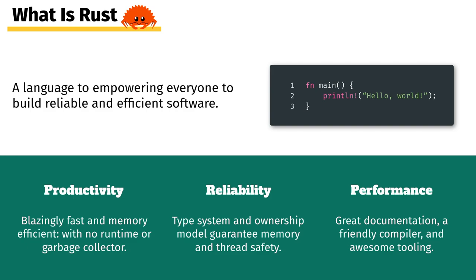The other two core characteristics are the advanced type system and the ownership model that guarantees memory and thread safety. Within the Rust ecosystem, variables are immutable by default and references follow the rule of one writer or multiple readers.